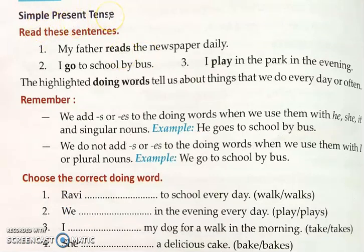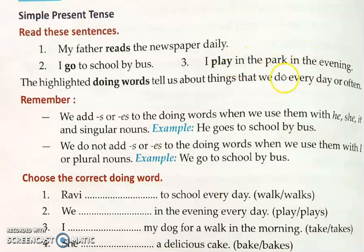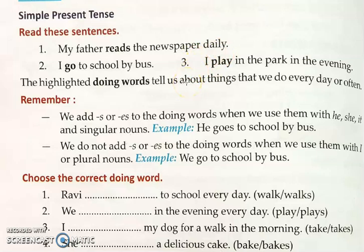Simple present tense. What is simple present tense? Let us read these sentences: 'My father reads the newspaper daily.' 'I go to school by bus.' 'I play in the park in the evening.' The highlighted doing words in these sentences tell us about things that we do every day or often.